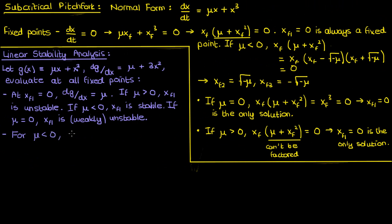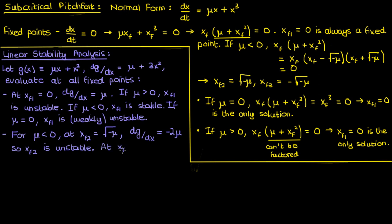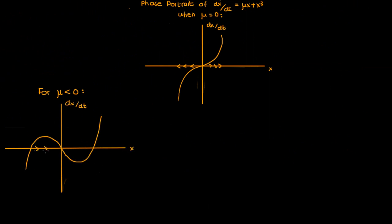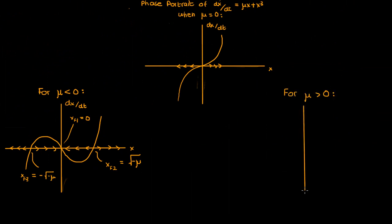Let's look at the stability of the two fixed points created when μ is negative: +√(−μ) and −√(−μ). When xf₂ = +√(−μ), dg/dx = −2μ, but since μ must be negative here, −2μ is positive, so xf₂ is unstable. The same applies to xf₃ = −√(−μ): dg/dx is also −2μ, so xf₃ is also unstable. I'll draw the phase portrait when μ is negative and when μ is positive for completeness.